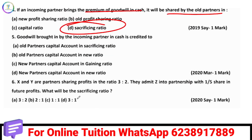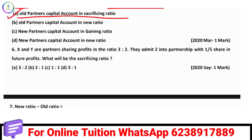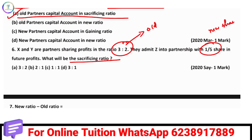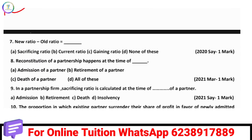If goodwill exists, it is credited accordingly. If you have an old partner, the sacrificing ratio applies. For example, if you have two partners with a ratio of 3:2 and a new partner takes a 1/5 share, you calculate the sacrificing ratio. With a new share ratio, you also determine the gaining ratio.